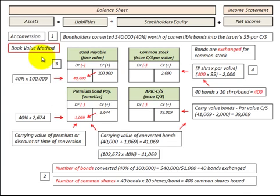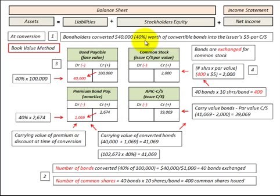Let's go through the mechanics of this bond conversion using the book value method. The bondholders are going to convert $40,000 worth — or 40% — of the convertible bonds into the issuer's $5 par value common stock.